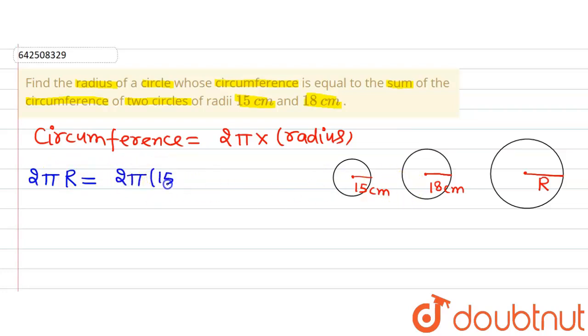That means 2π multiplied by 15 plus 2π multiplied by 18. Now in solving it we will get 2π can be taken common and in the brackets we will have 15 plus 18.